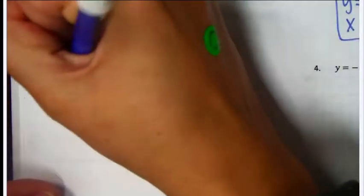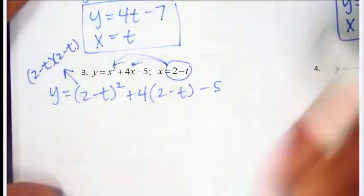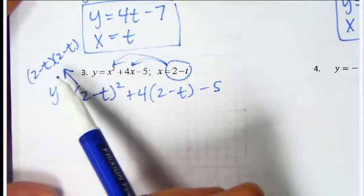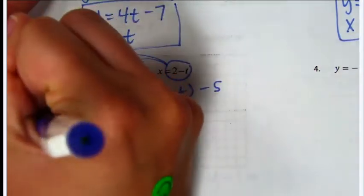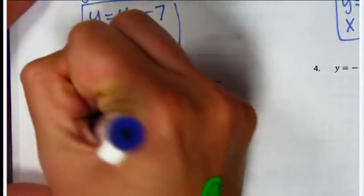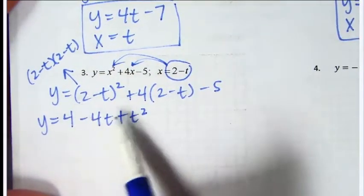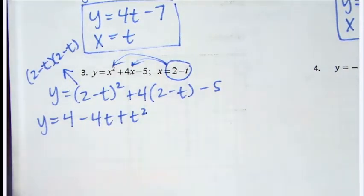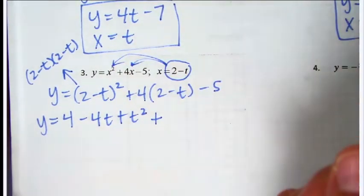Now (2 minus t) squared means you're really doing (2 minus t) times (2 minus t) — foil it: first, outside, inside, last. When you multiply it all out, you get 4 minus 4t plus t squared for that first parentheses.